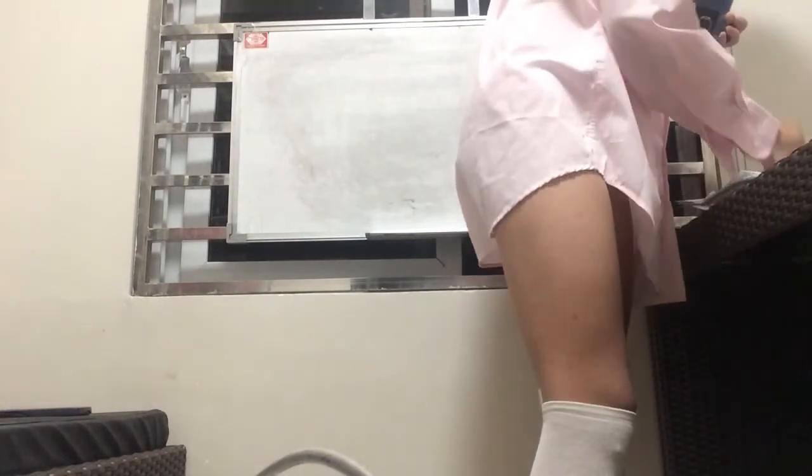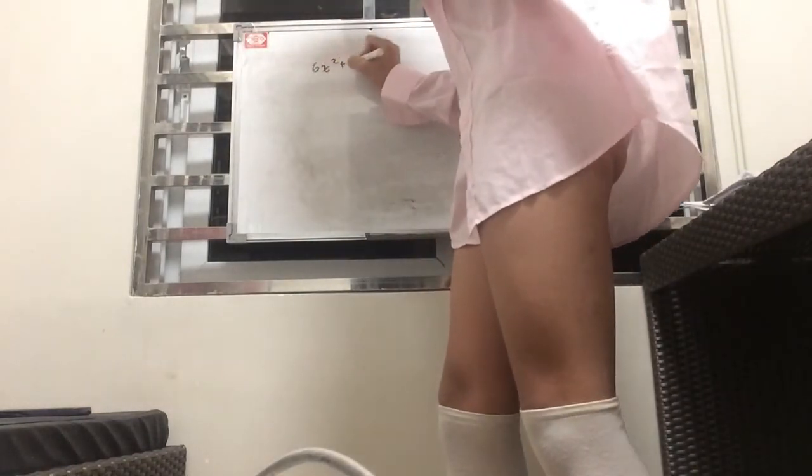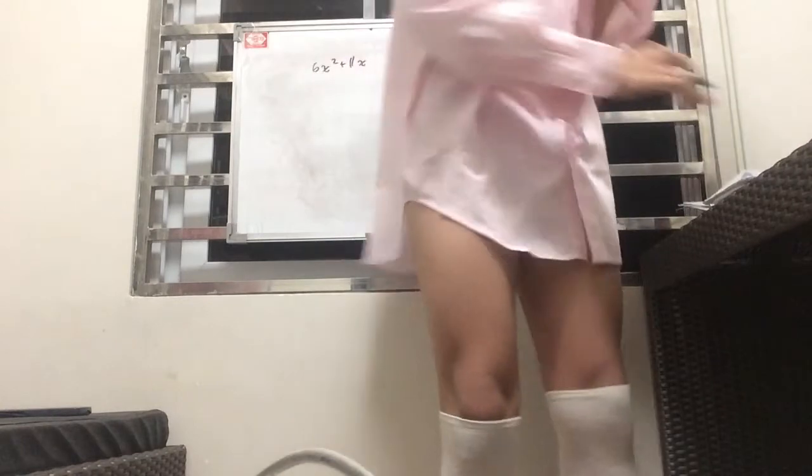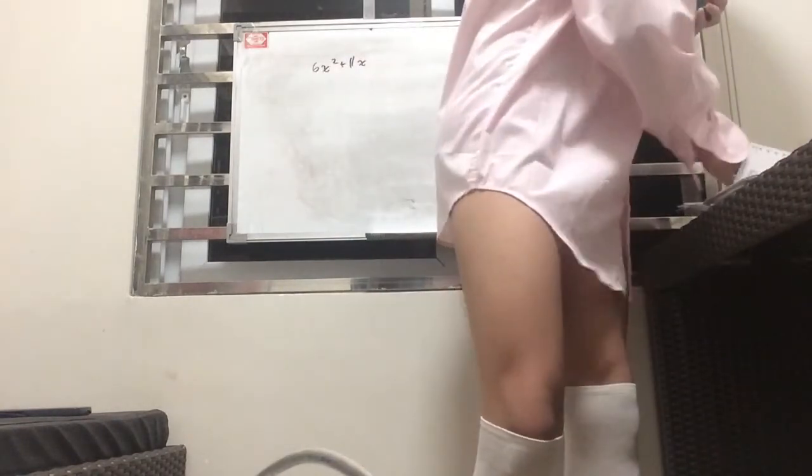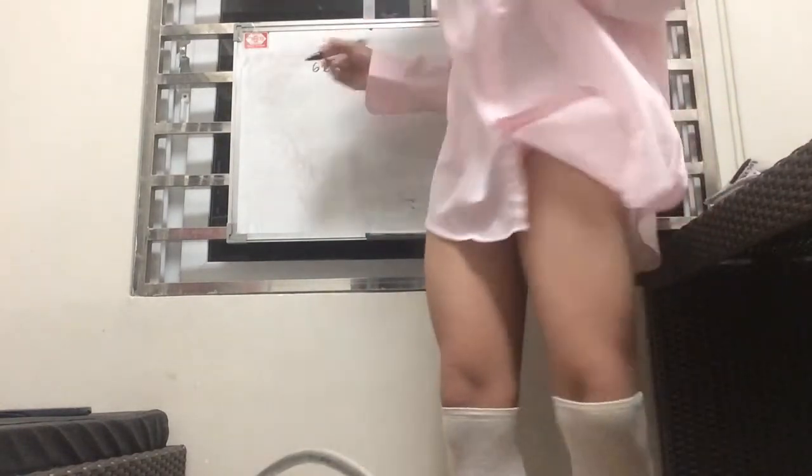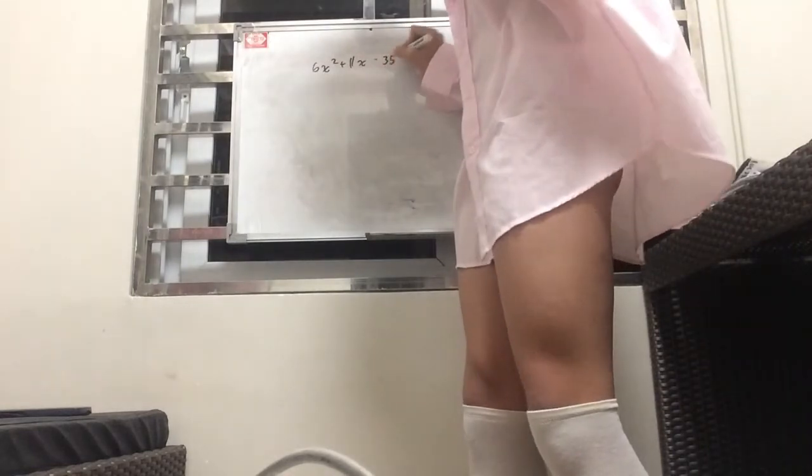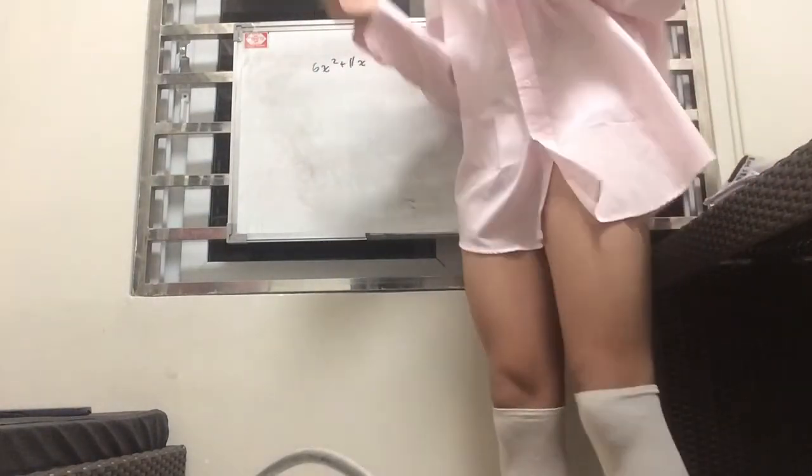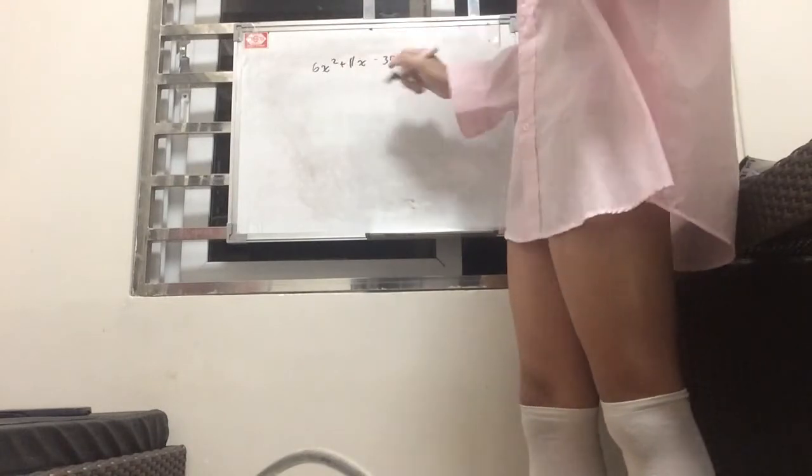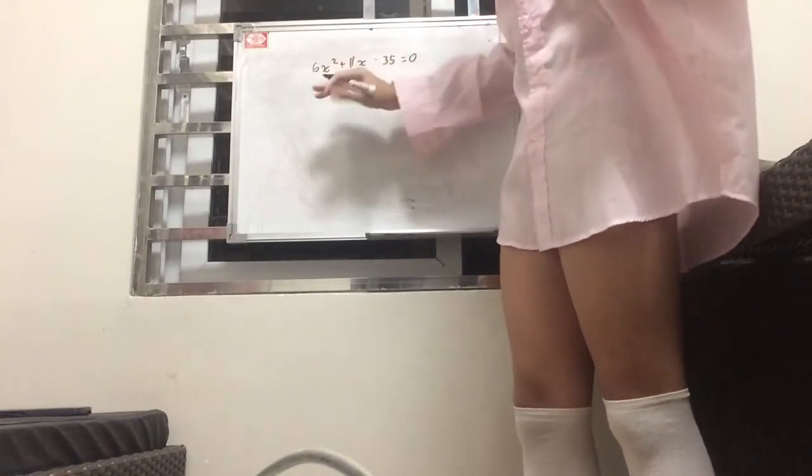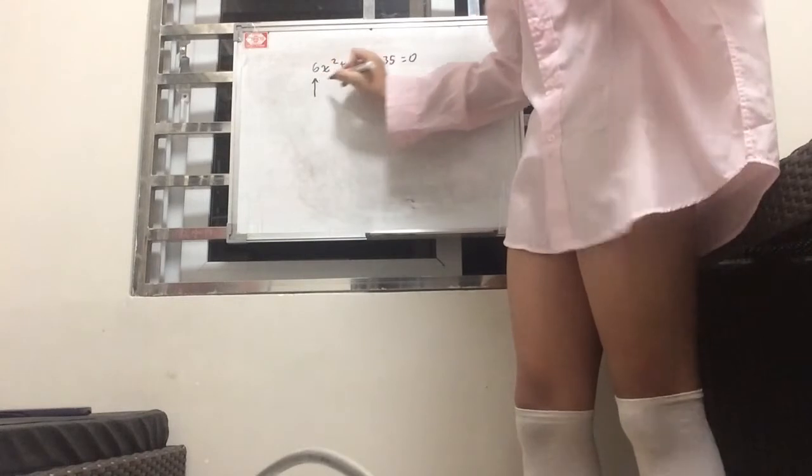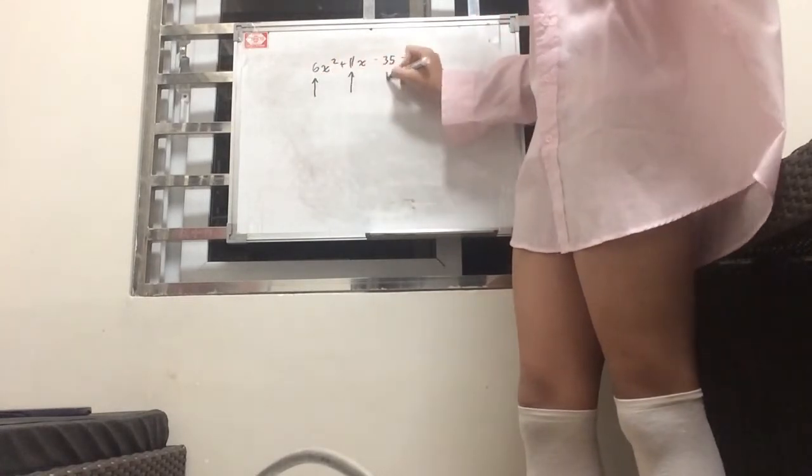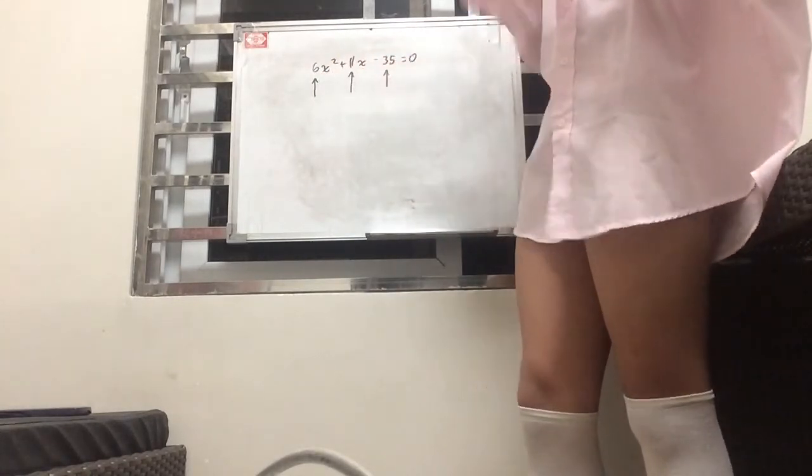Note that you may need your calculator when you solve these problems. So, I have a paper here that has a couple of practice stuffs on it. So, let's say we're given something like 6x squared plus 11x minus 35 equals 0.